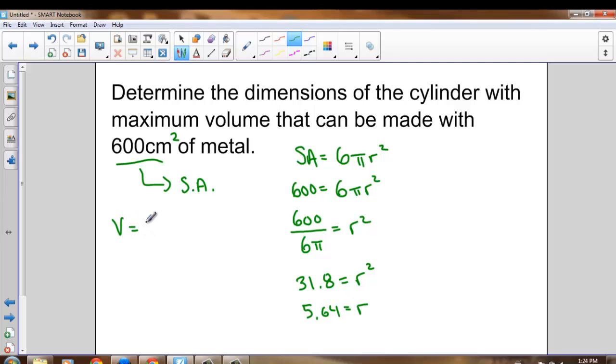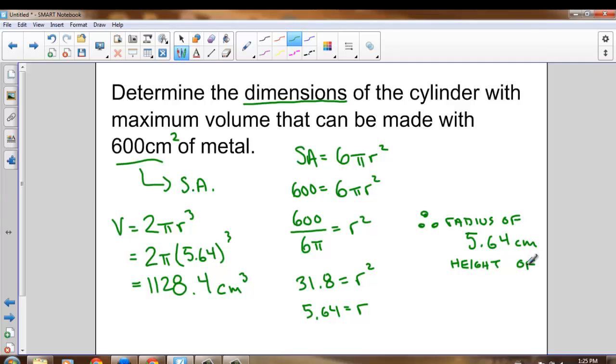I can then take that radius and sub it into my optimal volume equation, which is 2 pi r cubed. And I can sub in that number, 5.64 for r. And that gives me a volume of about 1,128.4 centimeters cubed. The question wants to know the dimensions of this cylinder that have the maximum volume. So the dimensions would be a radius of 5.64 centimeters and a height that is double that, so a height of 11.28.